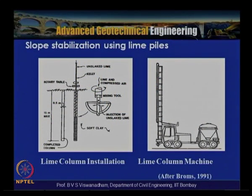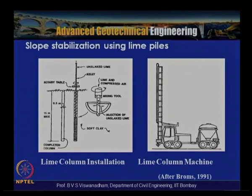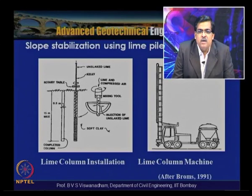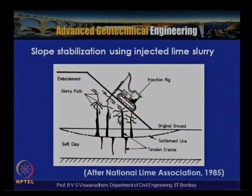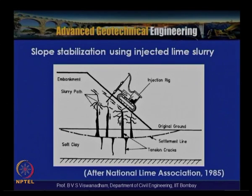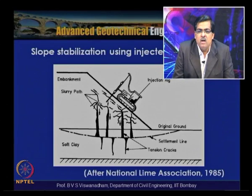The installation of lime columns or lime piles uses a 0.5 to 0.8 meter diameter hole drilled up to 15 meter length (Brahms, 1991), filled using a lime column machine. A typical slope stabilization using injected lime slurry is shown, and with portable rigs the injection can be mounted easily on the slope surface. This technique is particularly applicable for highway and railway embankments experiencing swelling and shrinking cycles.